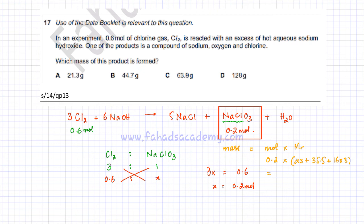That's going to be the MR, and we're going to find what the answer is using our calculators. It's going to be 0.2 multiplied by 23 plus 35.5 plus 16 into 3. And the value that we are going to get is 21.3 grams, which is the final answer for the question. This option A is your answer.